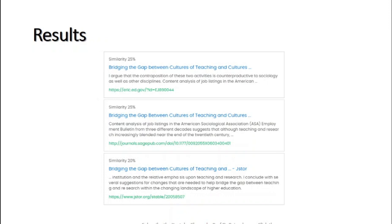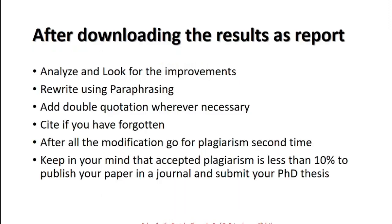Once you click the URL that appears in the results, you will be able to exactly track where you have plagiarized — it will tell you where you have taken that particular source. Accordingly, if you have forgotten to cite it, you can cite it; otherwise you can remove it or paraphrase it. After downloading the results as a report, you have to analyze and look for improvements. Rewrite using paraphrasing, and add double quotation marks wherever you have used the exact text but forgot to quote it — then it will not be considered plagiarism.